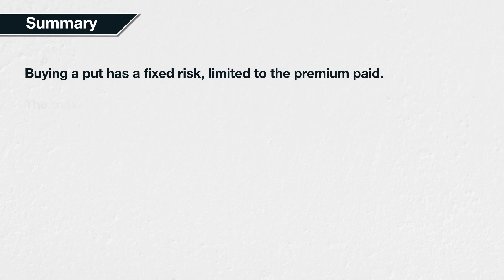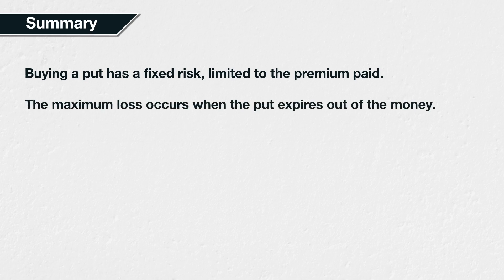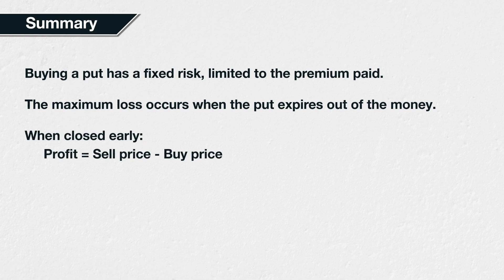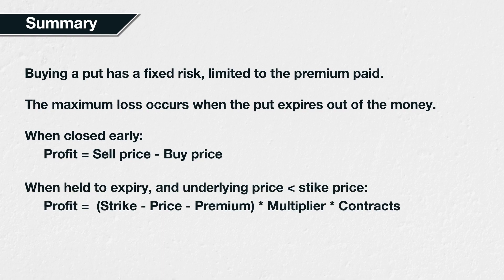In summary, buying a put option has a fixed risk. The maximum loss is limited to the premium paid for the put option. This maximum loss will occur when the option is held to expiration and the underlying price fails to fall below the strike price by this time. When closed early, the profit or loss of a long put option is equal to the price it was sold for minus the price paid for the option. When the put option is held to expiry and the underlying price is less than the strike price, we can use this formula to calculate the profit or loss precisely: strike price minus the price at expiration minus the premium paid, all multiplied by the contract multiplier, multiplied by the number of contracts. The further below the strike price the underlying price has moved, the more profit a long put option will make.